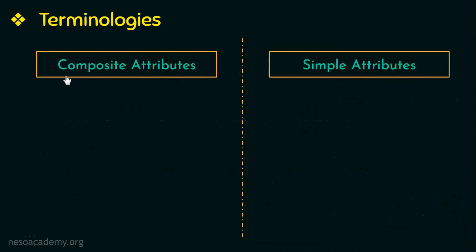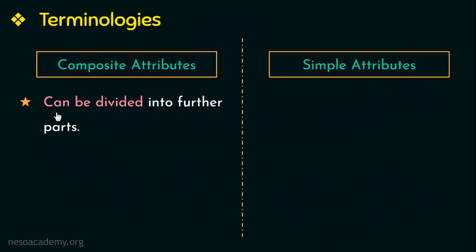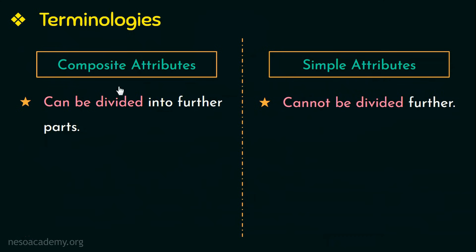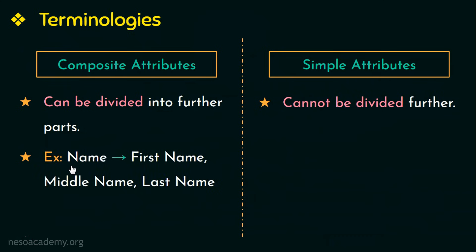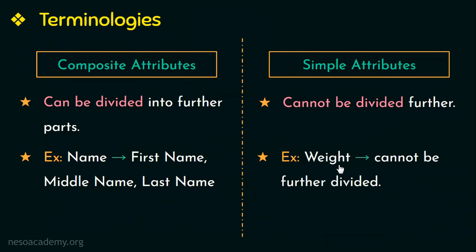First, let us see what composite attributes and simple attributes are. Composite attributes are attributes that can be divided into further parts, whereas simple attributes are attributes that cannot be divided further. An example of a composite attribute is name — this attribute can be divided into first name, middle name, and last name. An example of a simple attribute is weight, which cannot be further divided. Other examples of simple attributes could be salary or a person's age.